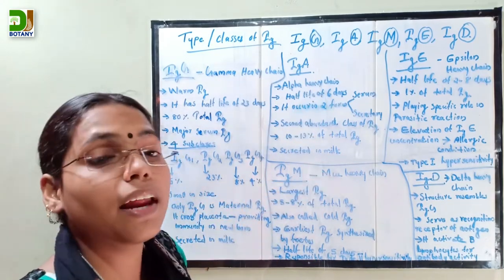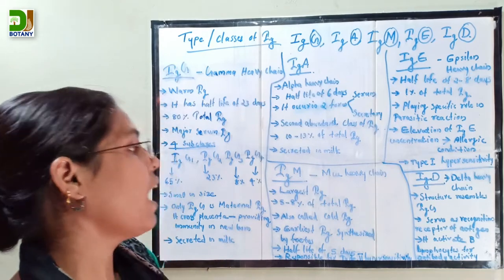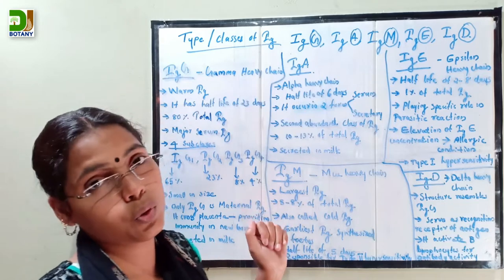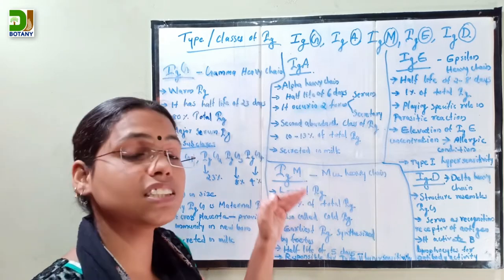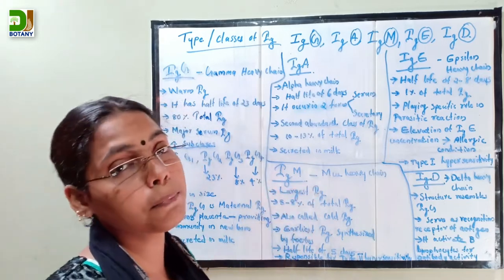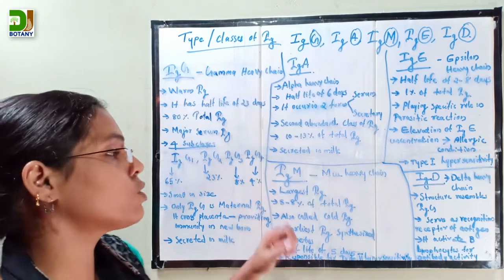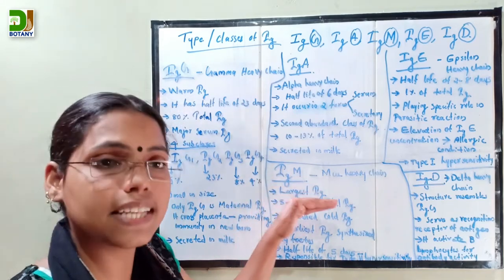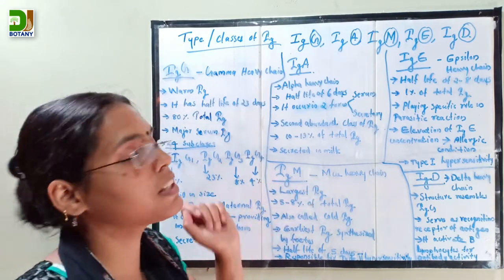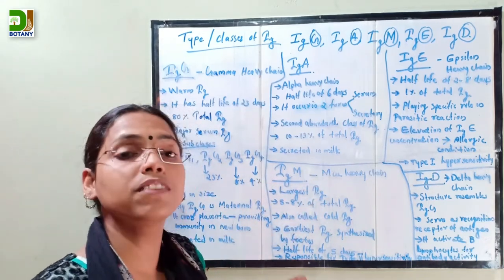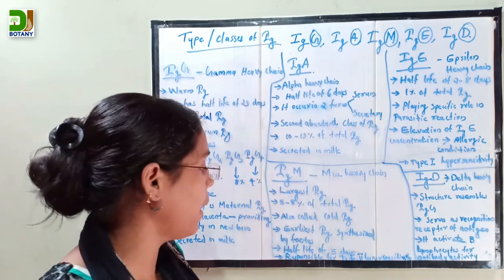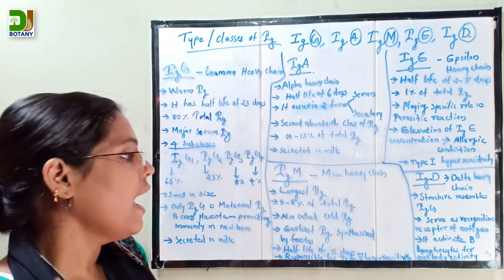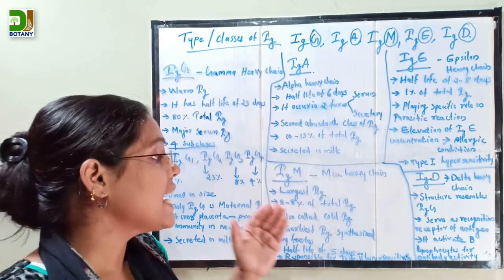The third type is immunoglobulin M. Immunoglobulin M contains mu heavy chains and is considered the largest sized immunoglobulin present in blood serum. It makes up 5 to 8% of total immunoglobulin and is also called cold immunoglobulin.